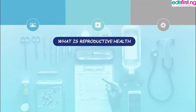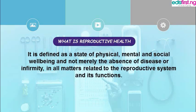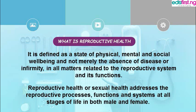What is reproductive health? Reproductive health is defined as a state of physical, mental, and social well-being and not just mere absence of disease or infirmity in all matters related to the reproductive system and its functions. So it has to do with a total well-being of your reproductive system. Reproductive health or sexual health addresses the reproductive processes, functions and systems at all stages of life in both the male and females.